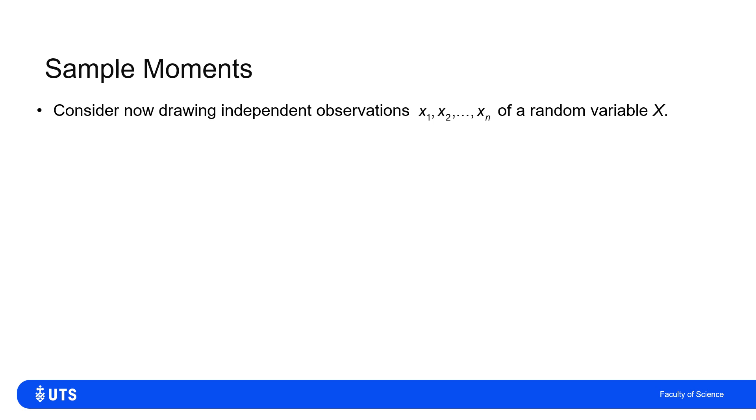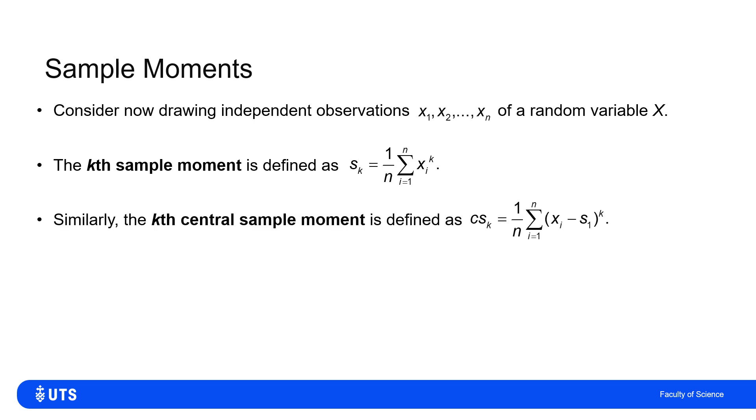Related to getting the moments of a distribution, we can also get the moments of a sample. So let's say I've got x1, x2, ..., up to xn, n independent observations of the variable X. Well, the kth sample moment is just add up each of those raised to the kth power, divide by the number of terms in the sum. And again, I can do a kth central sample moment, which is working out the difference away from the first moment, raised to the power of k, averaged.